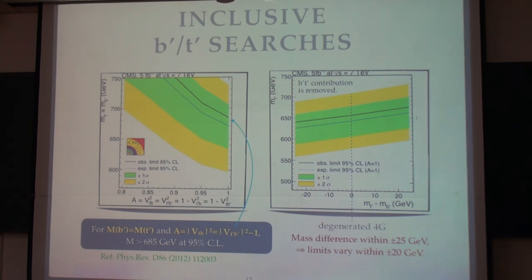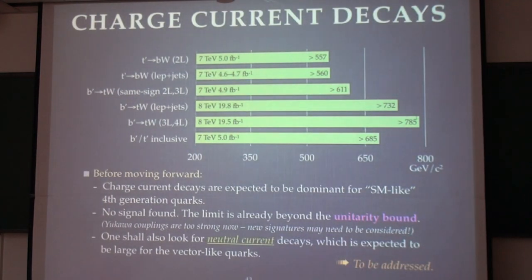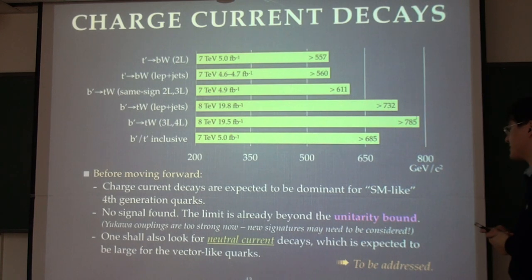This is what we call inclusive search. Before we go to further searches, we put all the searches together in one slide, which shows the limits from different searches. What we've done is charge current decay like decay to W. Basically, we can claim that all these are very strong limits and they are the unitarity bounds. You can probably see it's very strong. However, one can still look for neutral current decay like via Z or via Higgs in the final state, which can be expected to be large for vector-like quarks. So let me address that part.